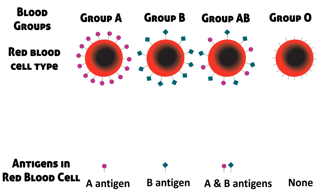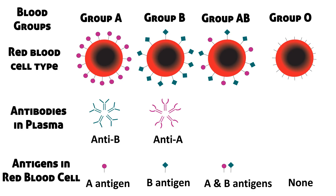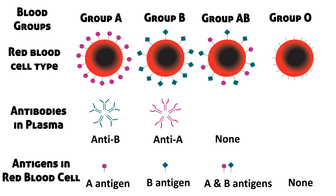Along with these antigens, there are certain types of antibodies present in the plasma, which is the main liquid constituent of the blood. People with blood group A have anti-B antibodies, which means they have antibodies against B antigen. People with blood group B have anti-A antibodies. Blood group AB has neither anti-A nor anti-B antibodies.